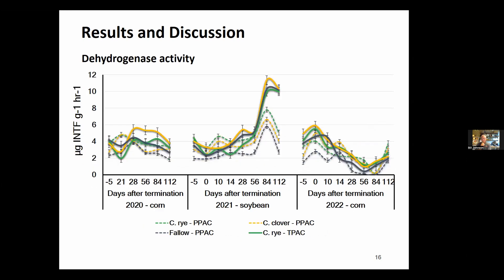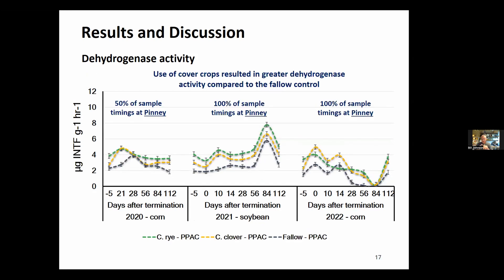Dehydrogenase is an enzyme in the soil known to degrade atrazine — that was the other measurement we took. Showing data from 2020, 2021, and 2022, those lines tend to lay on top of each other. Very similar to what we saw with beta-glucosidase: we did not see a difference at the site with higher organic matter, but at the site with lower organic matter we saw enhanced dehydrogenase activity about 50% of the sample timings during the first year and 100% of the sample timings in the second and third year of the trial.